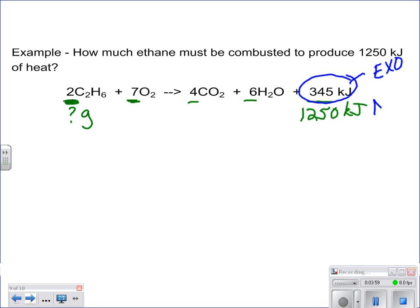it is exothermic, meaning my delta H value is really a negative 345 kilojoules. That does not mean that you write in your balanced equation, you don't write minus 345.